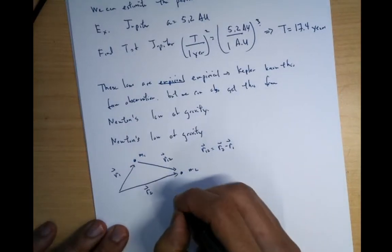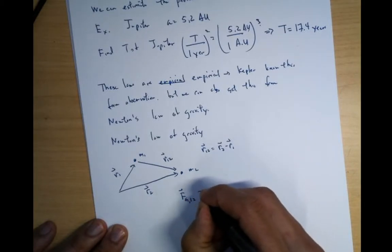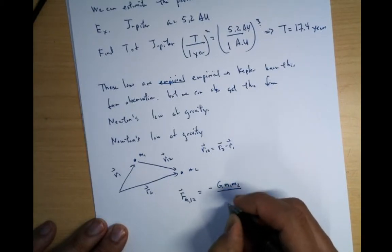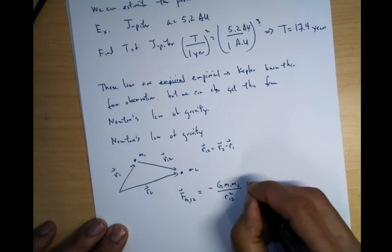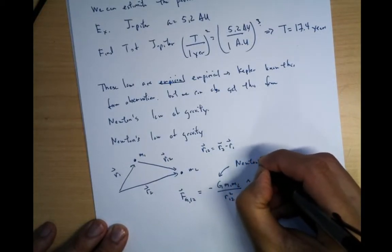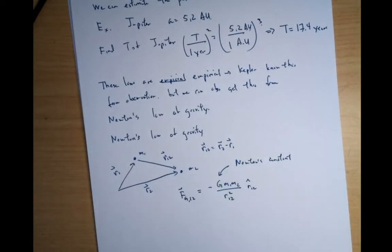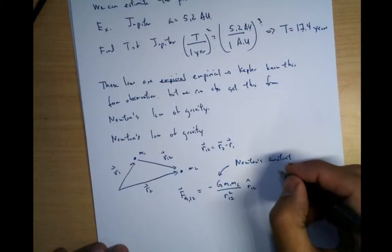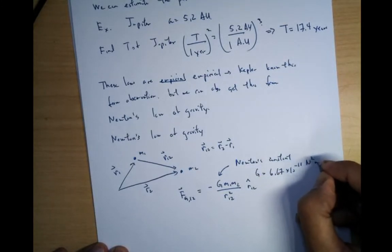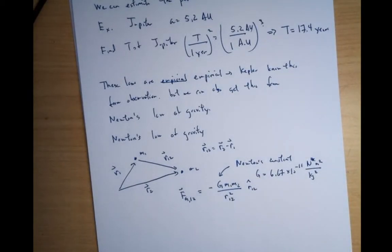So now Newton's law of gravity is the following: f of g from 1 to 2 is equal to minus g m1 m2 over r1,2 squared r1,2 hat. Whereas this g here is Newton's constant. And I'll state what it is. This is 6.67 times 10 to the minus 11 Newton meter squared over kilogram squared.